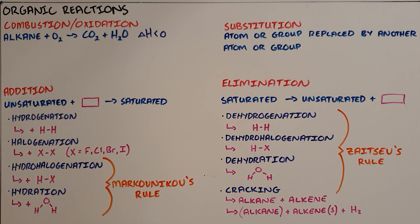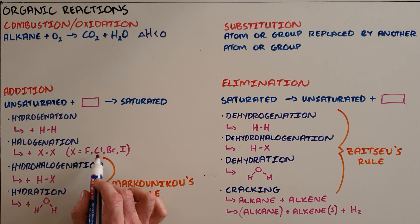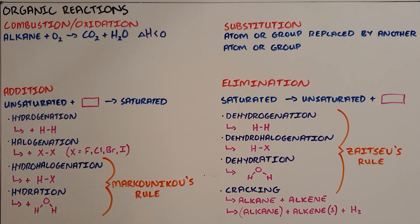The first type of addition reaction is known as hydrogenation. Hydrogenation is the addition of hydrogen to an unsaturated compound. The second type is halogenation, where a halogen is added to an unsaturated compound. The halogens here being the group 17 elements: fluorine, chlorine, bromine, and iodine.